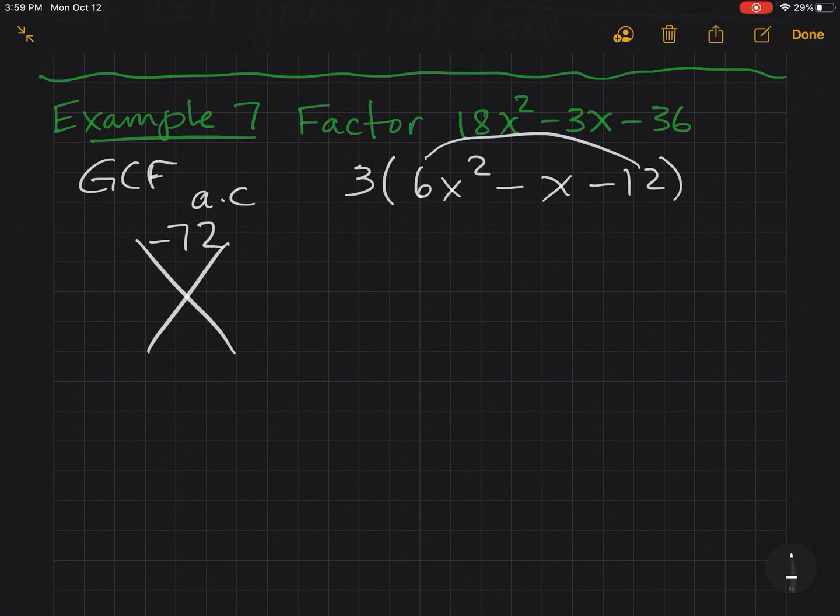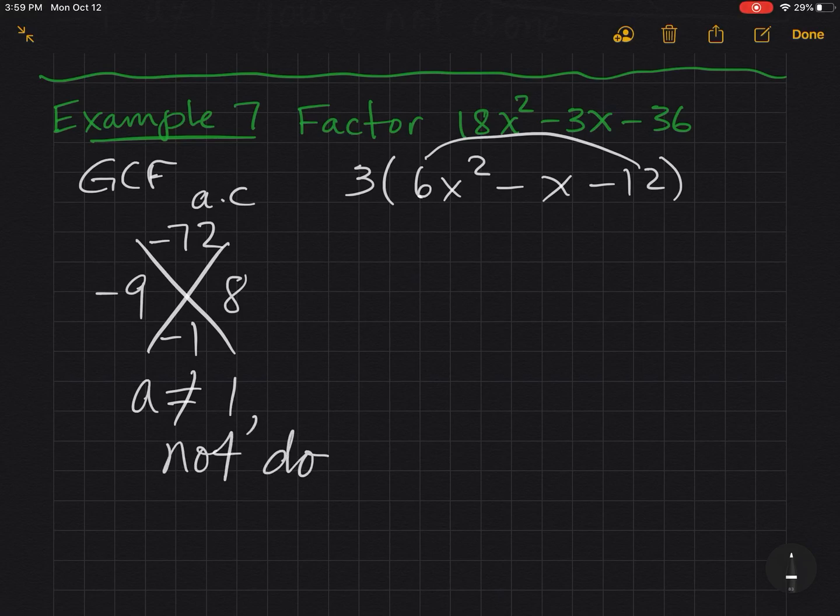So I'm going to do my special diamond with a times c. So when I multiply that together, I get a negative 72. On the bottom, negative 1. 9 and 8 look like they might work. Negative on the 9. A is not 1. So I'm not done.